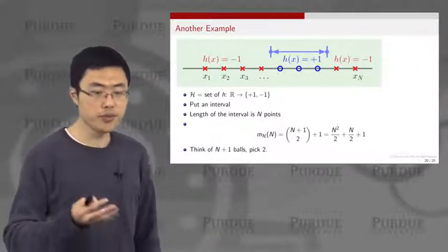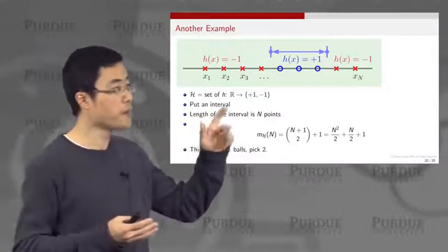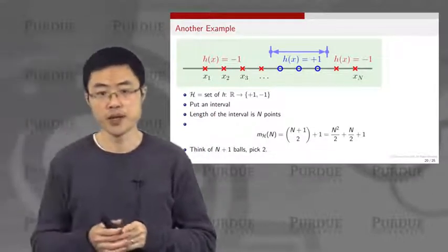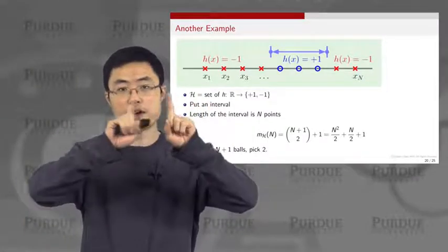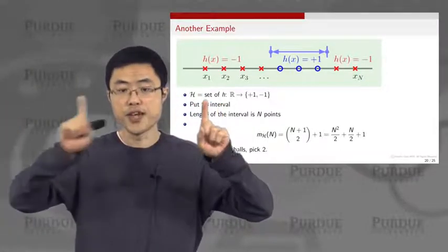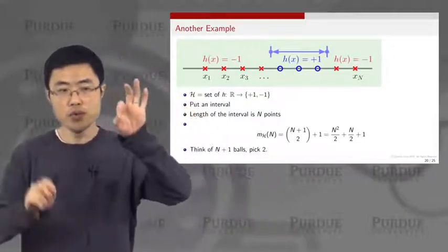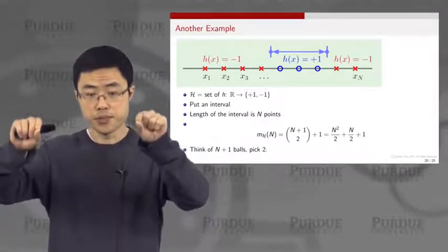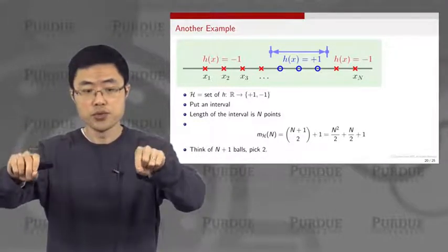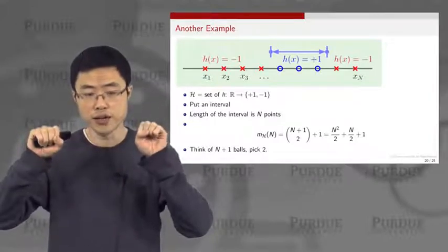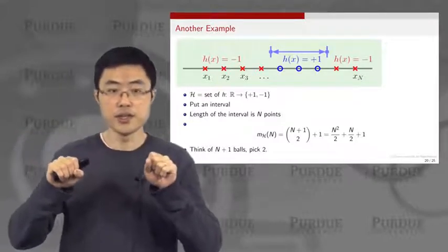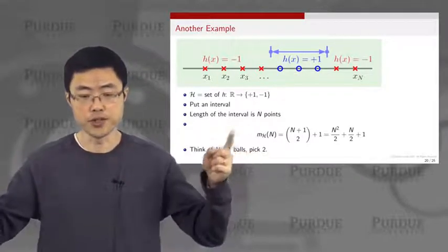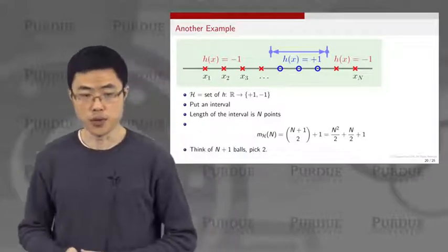To derive this equation: you have n plus one intervals and you want to pick two — one being the beginning interval and one being the ending interval — that is, the starting point and end point. You have n plus one intervals and pick two of them. The number of combinations is C(n+1, 2), and the plus one accounts for the end points. Factoring this out gives n² / 2 + n / 2 + 1, which is the number of dichotomies for the interval hypothesis set.